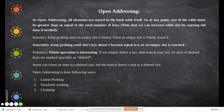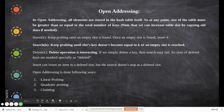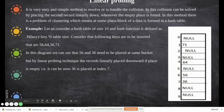In open addressing, at any point the size of the table must be greater than or equal to the total number of keys. There are three main techniques in open addressing: linear probing, quadratic probing, and chaining (using linked lists). Now we will see what linear probing is.